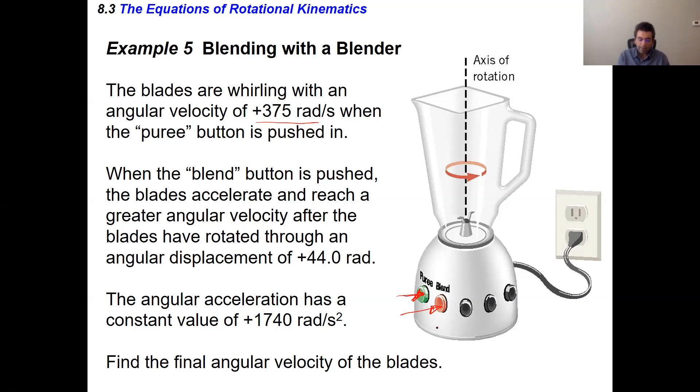The greater angular velocity is reached after the blades have rotated through an angular displacement of 44 radians. Now 44 radians is much bigger than 6 radians, which is one circle, so 44 radians means going around the circle multiple times. In fact, it's exactly seven circles, because 44 radians equals 14π, which is seven revolutions, since π is 22 over 7.